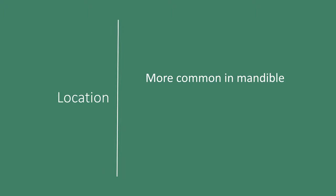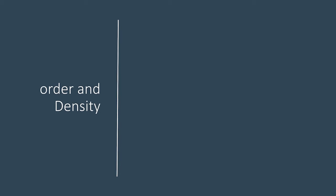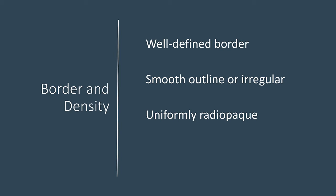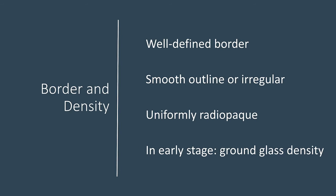Dense bone islands are more common in the mandible, mostly in the premolar and molar areas, though they can occur in other bones of the skeleton. The borders are always well defined — this is one of the critical features for interpretation. The outline can be smooth or irregular. The density is mostly radiopaque, though in early stages it can have a ground glass density, as we saw in our case.